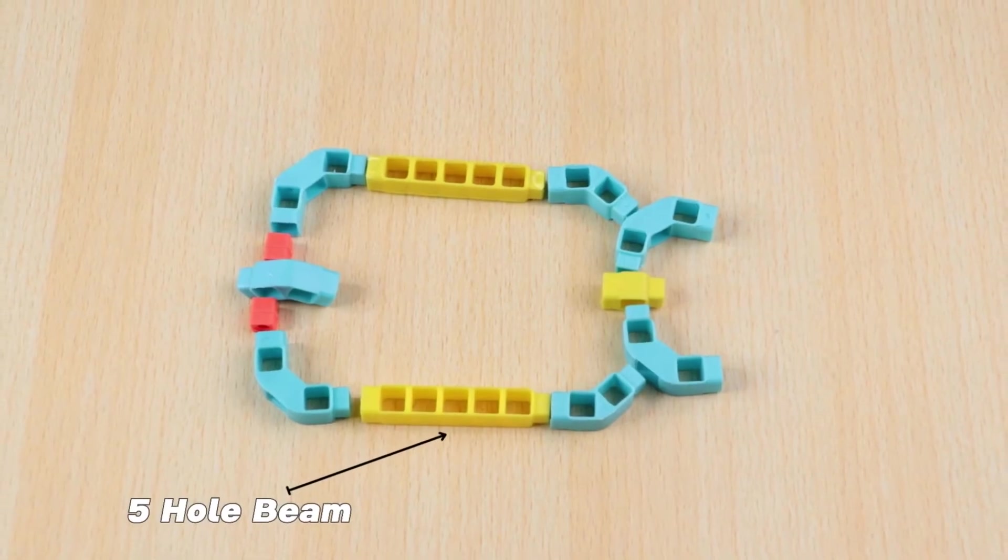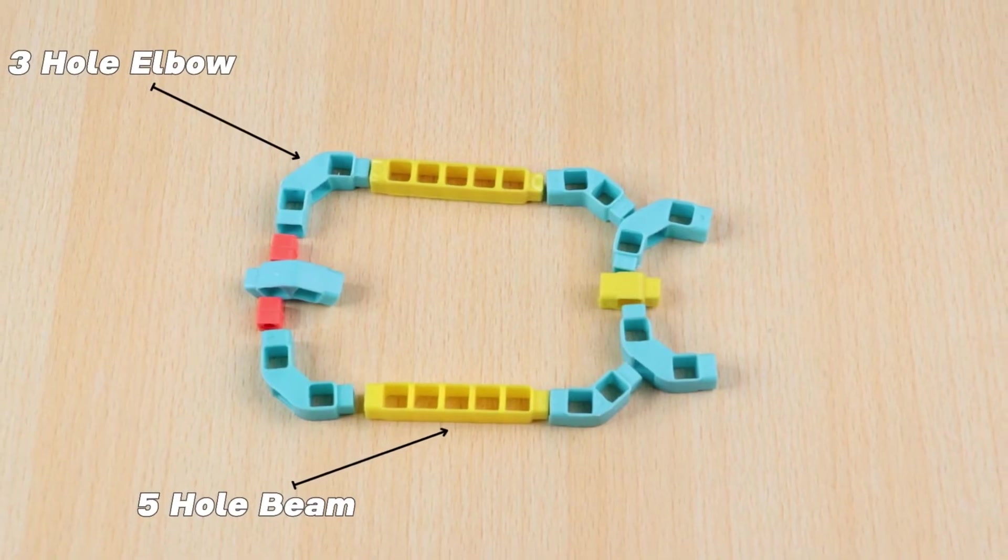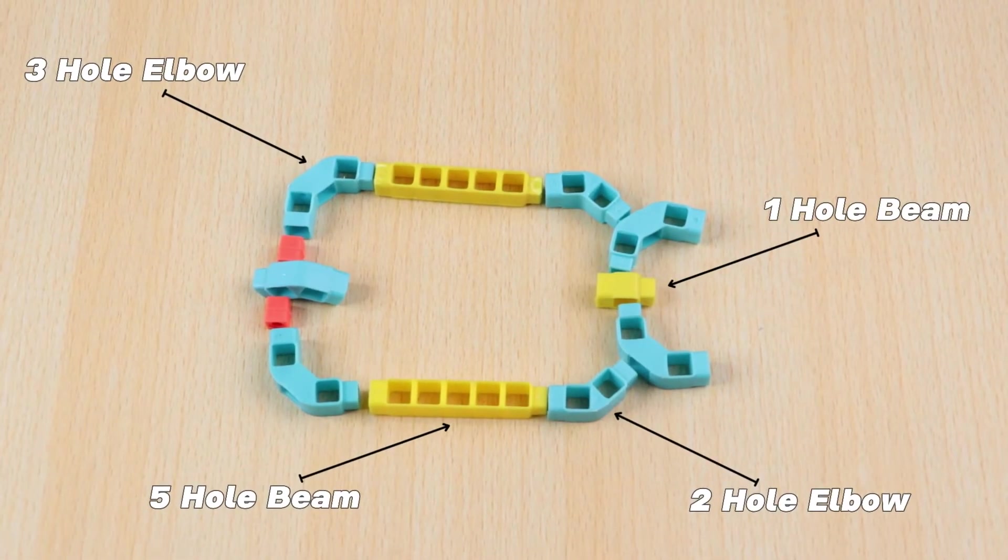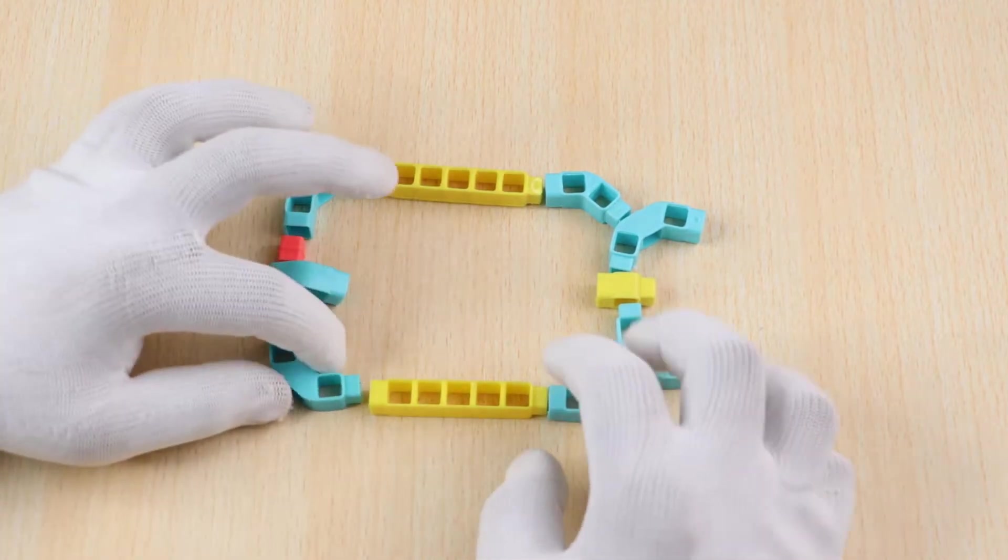First take 2 five-hole beams, 4 three-hole elbows, 3 two-hole elbows, 1 one-hole beam, 2mm couplers and join them together, as shown.